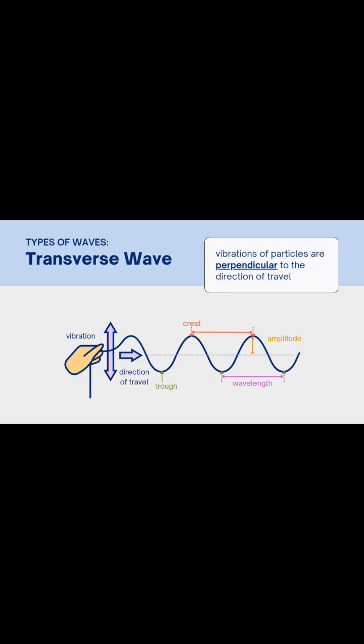Imagine a wave on a rope or ripples on the surface of water. The wave moves forward, but the water moves up and down. That's perpendicular motion.